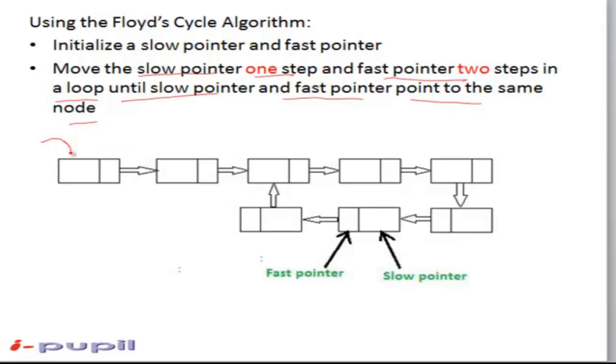So what happens is that initially both the fast pointer and slow pointer are pointing to the same node.